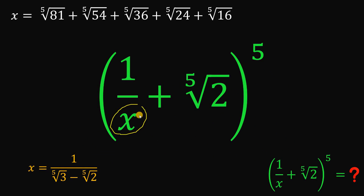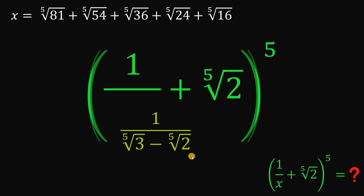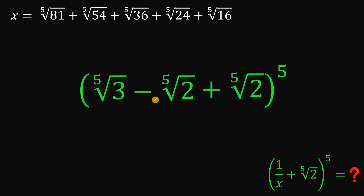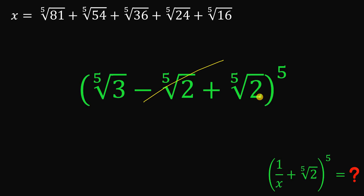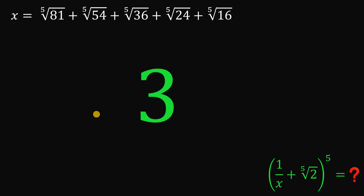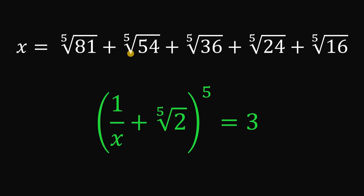Now let's use this value of x to evaluate the expression. Replacing x with 1 over (p-th root of 3 minus p-th root of 2), taking its reciprocal gives p-th root of 3 minus p-th root of 2. Adding p-th root of 2 gives 0 for those terms, leaving just p-th root of 3, which equals 3. Therefore, given x equals p-th root of 81 plus p-th root of 54 plus p-th root of 36 plus p-th root of 24 plus p-th root of 16, the value of (1/x + p-th root of 2) to the fifth power is simply 3.